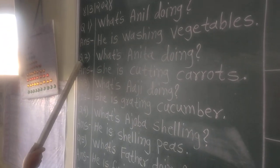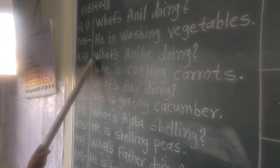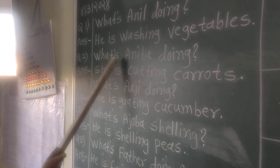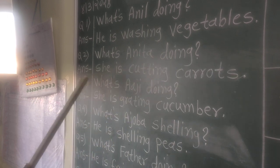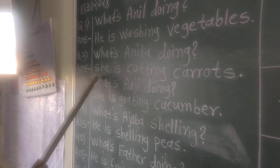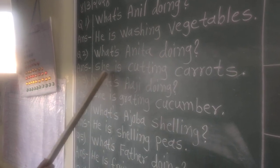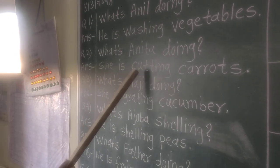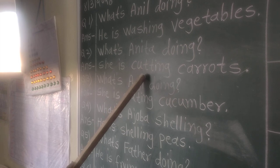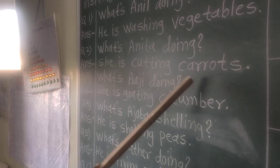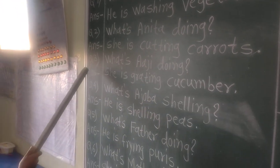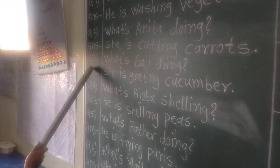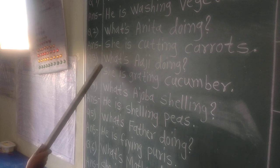Question 2. What's Anita doing? Answer. She is cutting carrots.